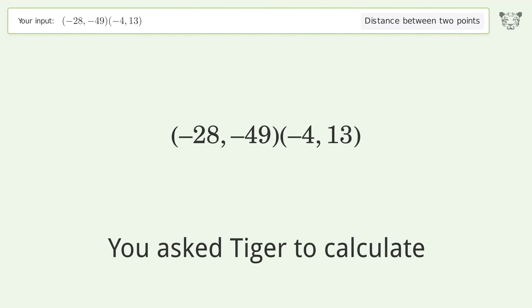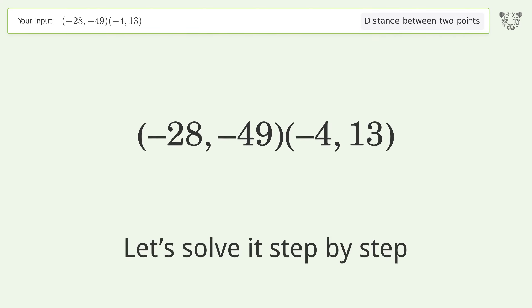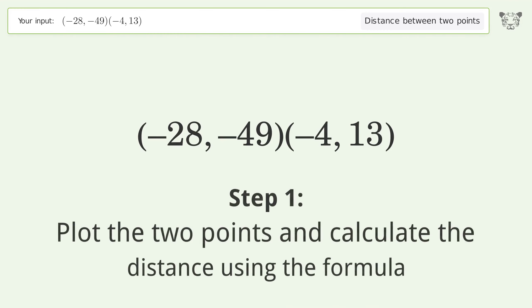You asked Tiger to calculate the distance between two points. The distance between the two points is the square root of 4420 or 66.483. Let's solve it step by step: plot the two points and calculate the distance using the formula.